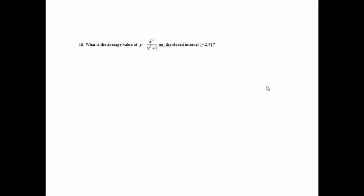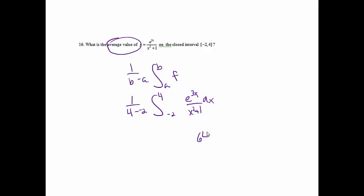Okay, number 16. What is the average value of y equals e to the 3x over x squared plus 1 on the closed interval from negative 2 to 4? Well, average value is the formula 1 over b minus a times the integral from a to b of your function. So we're going to have 1 over 4 minus negative 2, and then the integral from negative 2 to 4 of our function. Okay, and then we're going to let our calculator do all of the work for us, and if we do that, we'll get 644.052.